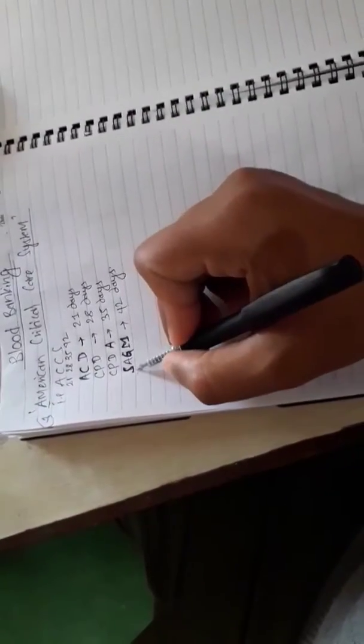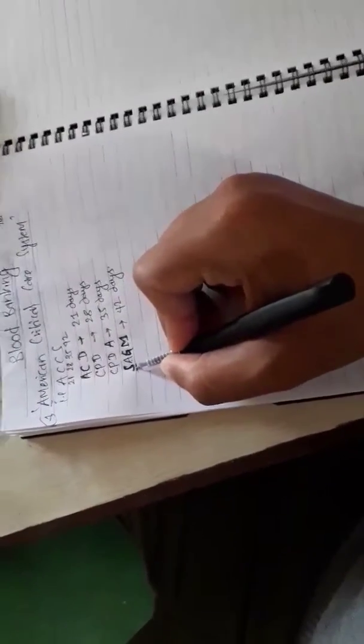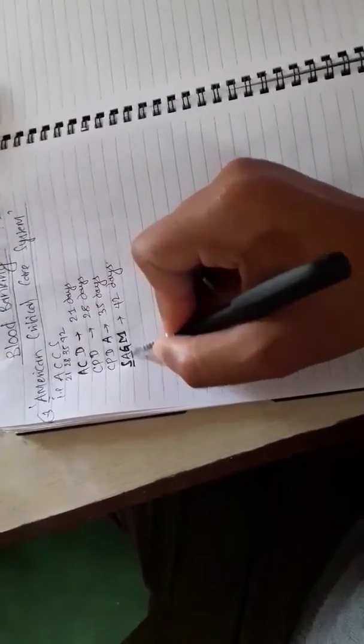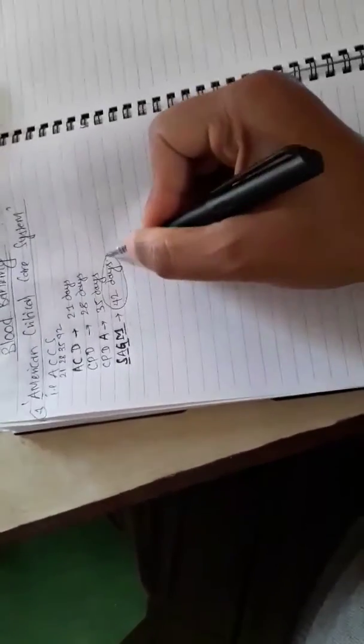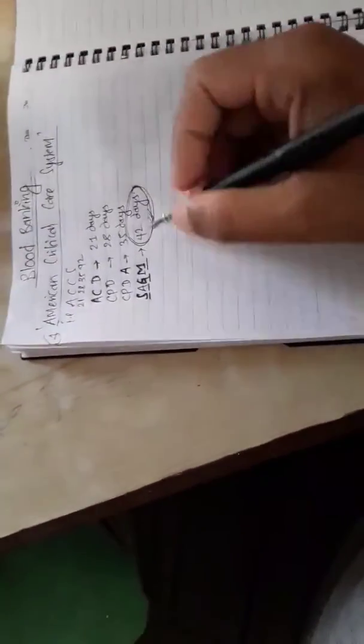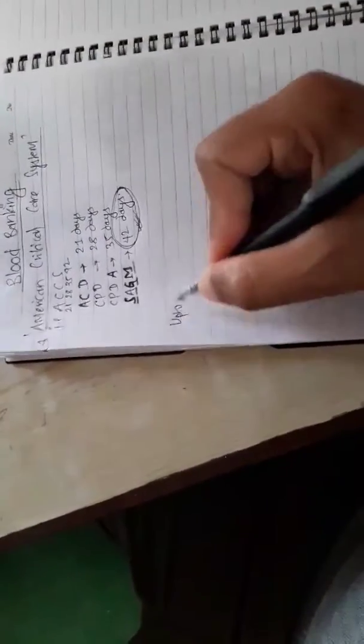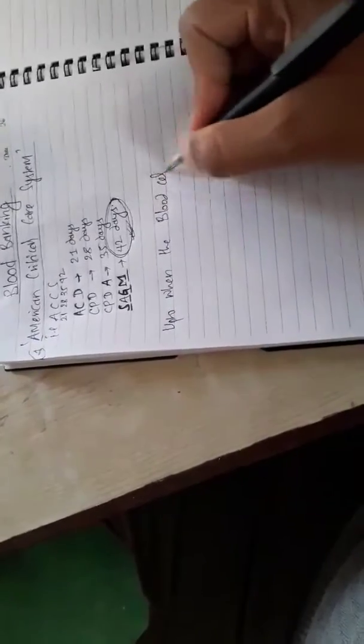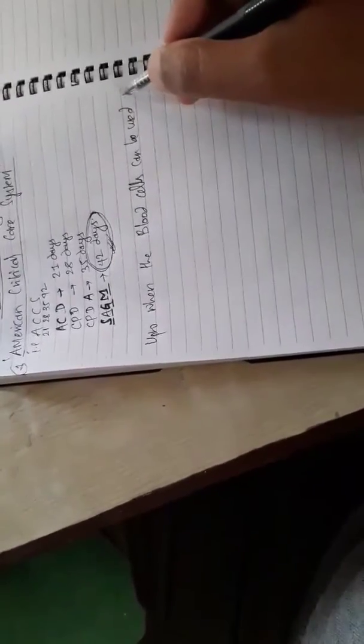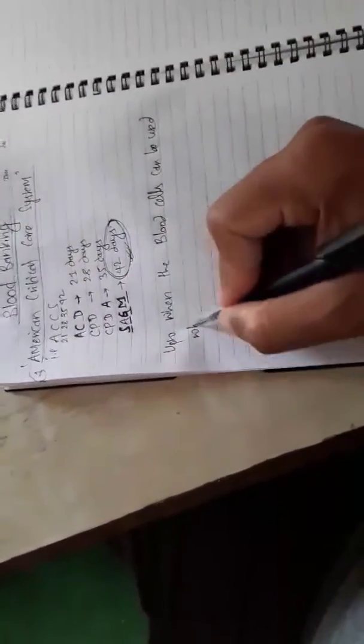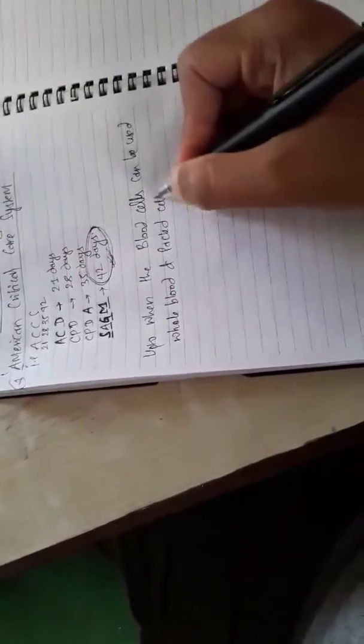In SAGM, everything is available. Normal saline is there to maintain the osmolality of the medium, adenine is there for providing the ATP, glucose is there for providing energy source, and mannitol is there for maintaining the membrane stability. Therefore, this preservative maintains the highest lifespan of RBC or whole blood, that is for 42 days. This is for when the blood cells can be used or the blood can be transfused. For whole blood and RBC it is 42 days maximum if the preservative medium is SAGM.